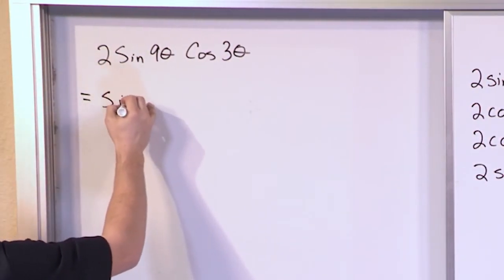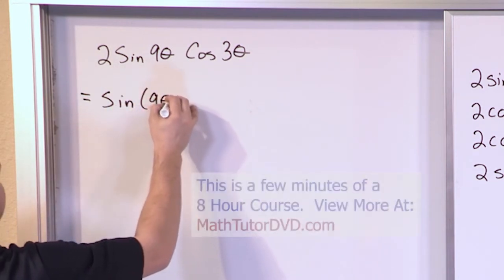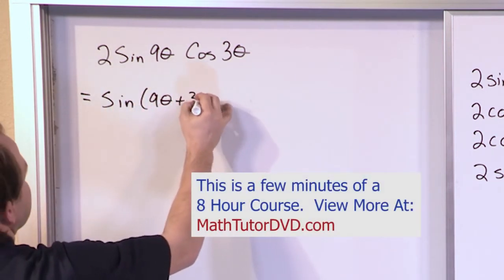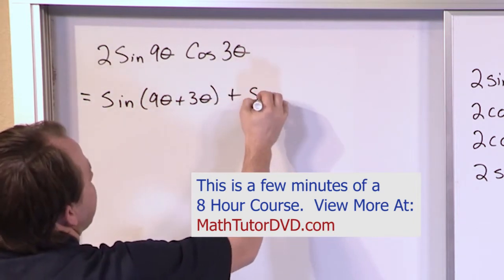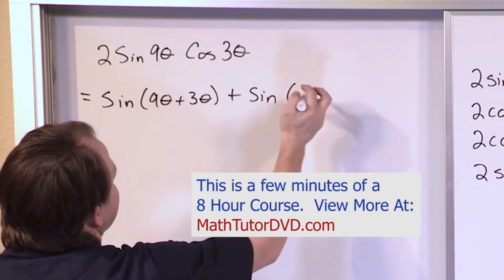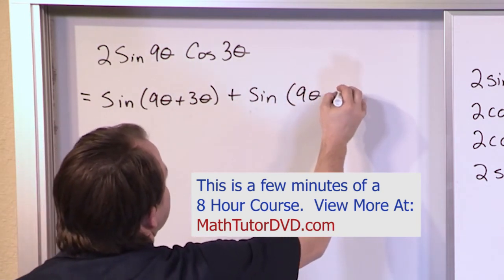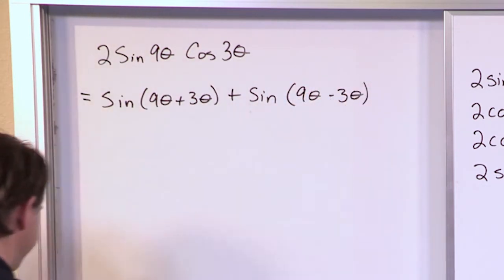So it's the sine of the sum of those angles, 9 theta plus 3 theta. Whatever is in here counts as the angle, plus the sine of the difference of these angles. You have to go in the order that you start with, 9 theta minus 3 theta, like that.